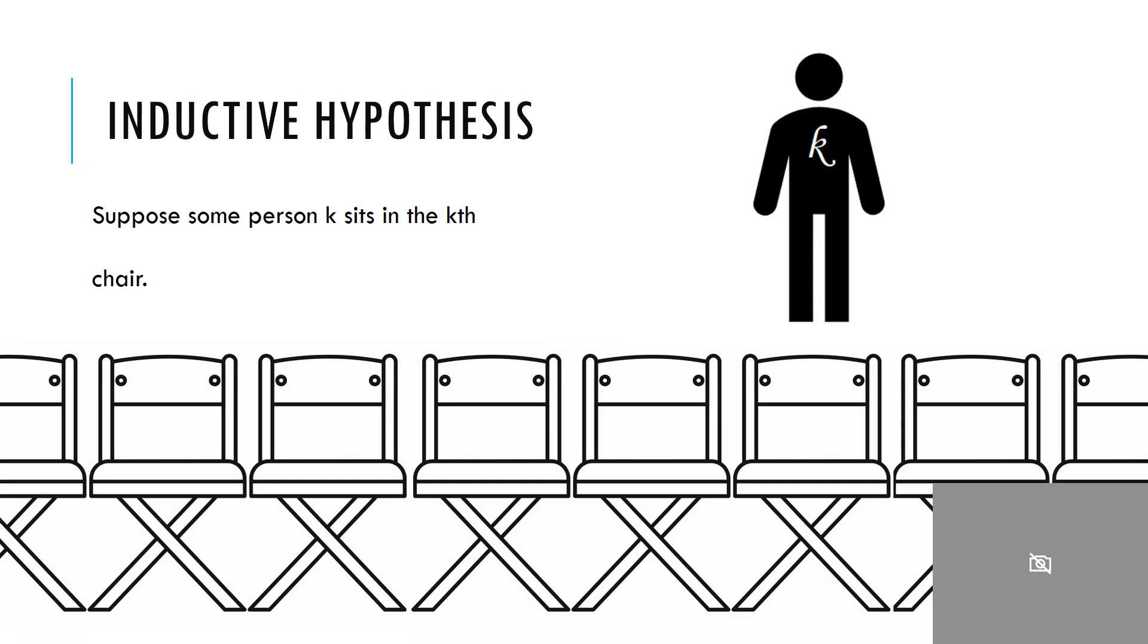Well not really because if person k sits in chair number k I know person k plus one can't sit in that chair because it's occupied and that it won't sit in any of the chairs greater than k plus one because that's part of the rules of my analogy. But there's nothing stopping person k plus one from sitting in chair k minus one.